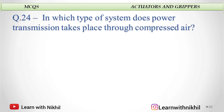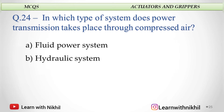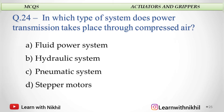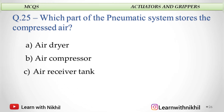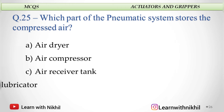In which type of system does power transmission take place through compressed air? A. Fluid power system, B. Hydraulic system, C. Pneumatic system, or D. Stepper motor? And the answer is pneumatic system. Which part of the pneumatic system stores the compressed air? A. Air dryer, B. Air compressor, C. Air receiver tank, or D. Air lubricator? In a pneumatic system, compressed air is stored in the air receiver tank.